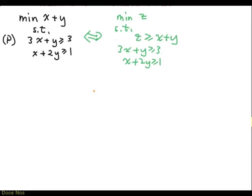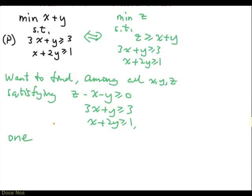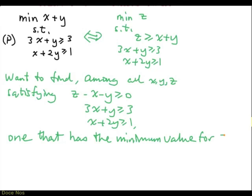Now let's look at the green problem. This is saying: among all x, y, z satisfying the constraints, find one that has the minimum value for z. This green optimization problem is the same as asking: over all solutions x, y, z satisfying the constraints, what is the minimum possible value for z? To answer that question, we just have to find out how low z can be. We do that by eliminating the variables y and x.